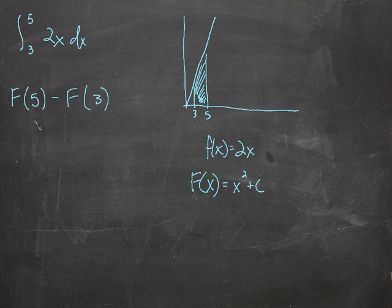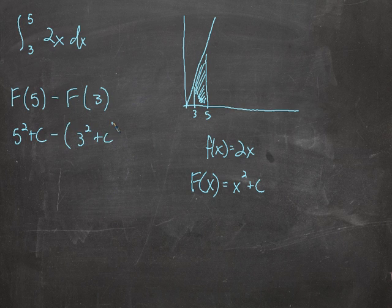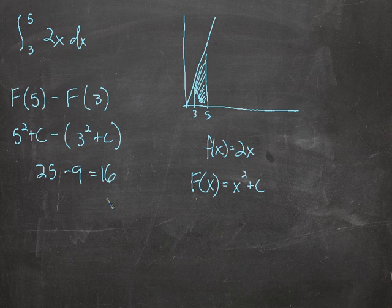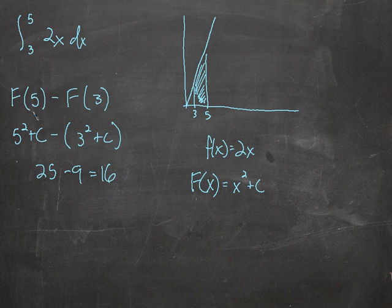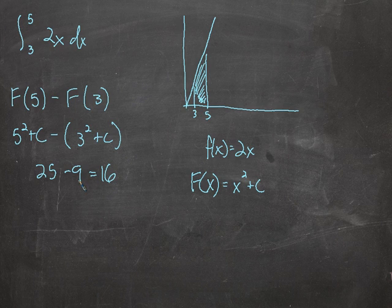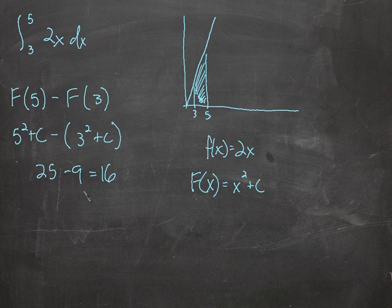So we take the antiderivative x squared plus c, evaluate at 5, and subtract the value at 3: (5 squared + c) minus (3 squared + c). You see why c doesn't matter — c minus c cancels out. So we get 25 minus 9, which equals 16. The connection between a function and its antiderivative is incredible: just by taking the value of the antiderivative at one end of the interval minus the value at the other end, we find the area under this curve. Hopefully this helps with your intuition for why this is the Fundamental Theorem of Calculus and why it's true.